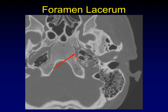So why is foramen lacerum important? Well, for one thing, it lies just below the carotid canal, and so abnormalities of the carotid can affect foramen lacerum. Also, this can be a path of spread, both for tumor and especially for infection. If you have an infection spreading across the inferior aspect of the skull base, it can encroach upon the intracranial vault through foramen lacerum.